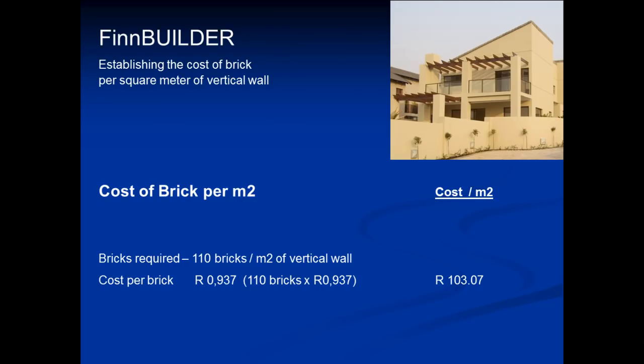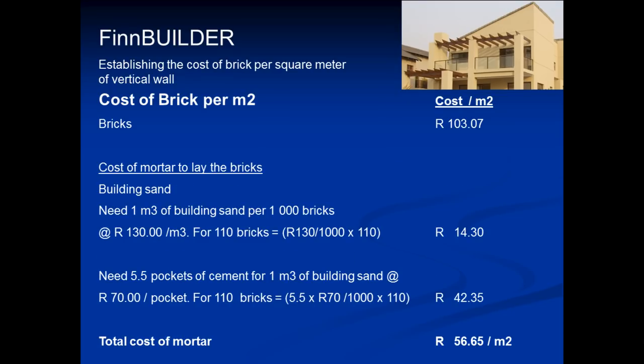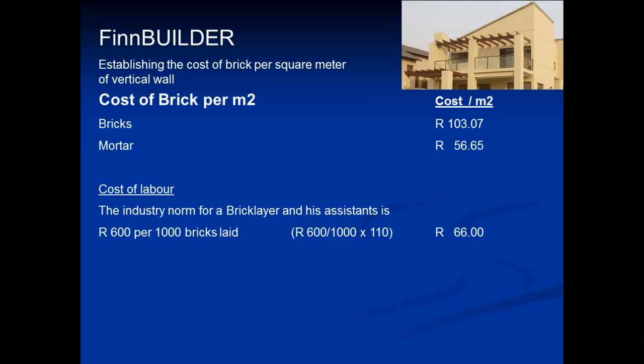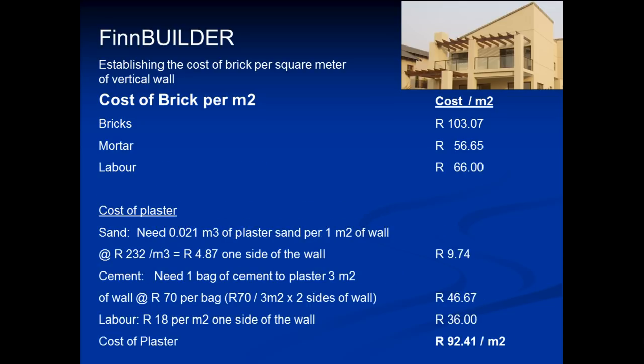First of all, let's establish the cost of building with brick per square meter of vertical wall. We need 110 bricks per square meter and at 93 cents per brick, this translates to 103 Rand per square meter. Next we need the cost of mortar to lay the bricks, so we can establish the cost of building sand and cement at 56 Rand per square meter. The cost of labour computes to 66 Rand and lastly the cost of plaster at 92 Rand per square meter.